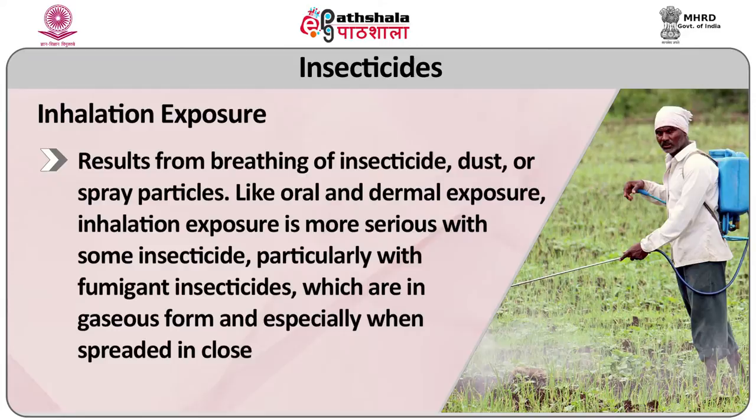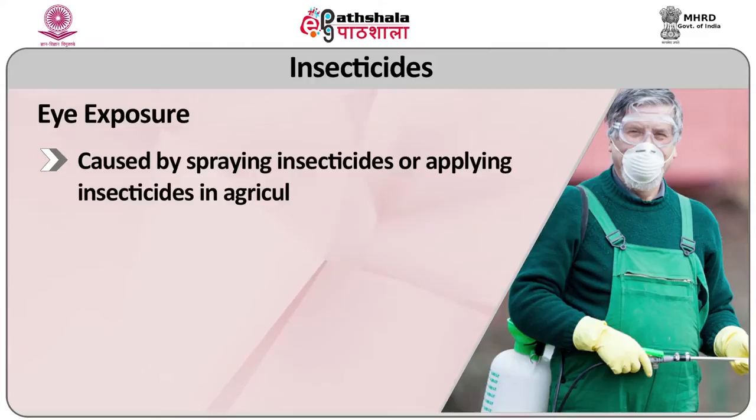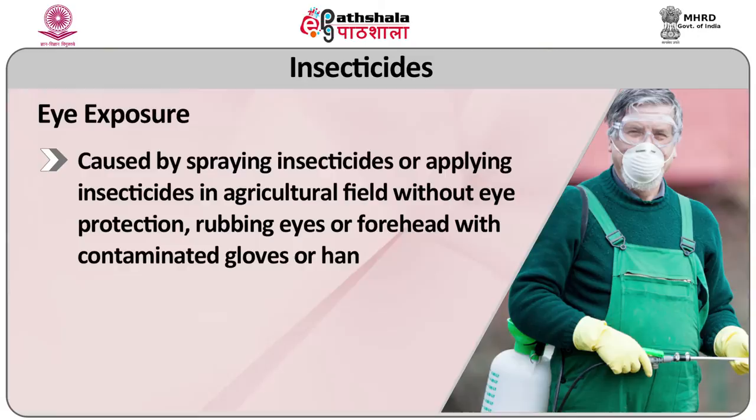Like oral and dermal exposure, inhalation exposure is more serious with more insecticide, particularly with fumigant insecticides which are in gaseous form and especially when spread in a closed room. Eye exposure is also caused by spraying or applying insecticide in agricultural field without eye protection, rubbing eyes or forehead with contaminated gloves or hands, and pouring dust, granule or powder formulation without eye protection. Any insecticide can cause poisoning after being swallowed, inhaled or absorbed through the skin. Generalized symptoms may include eye tearing, coughing, heart problems and breathing difficulties.